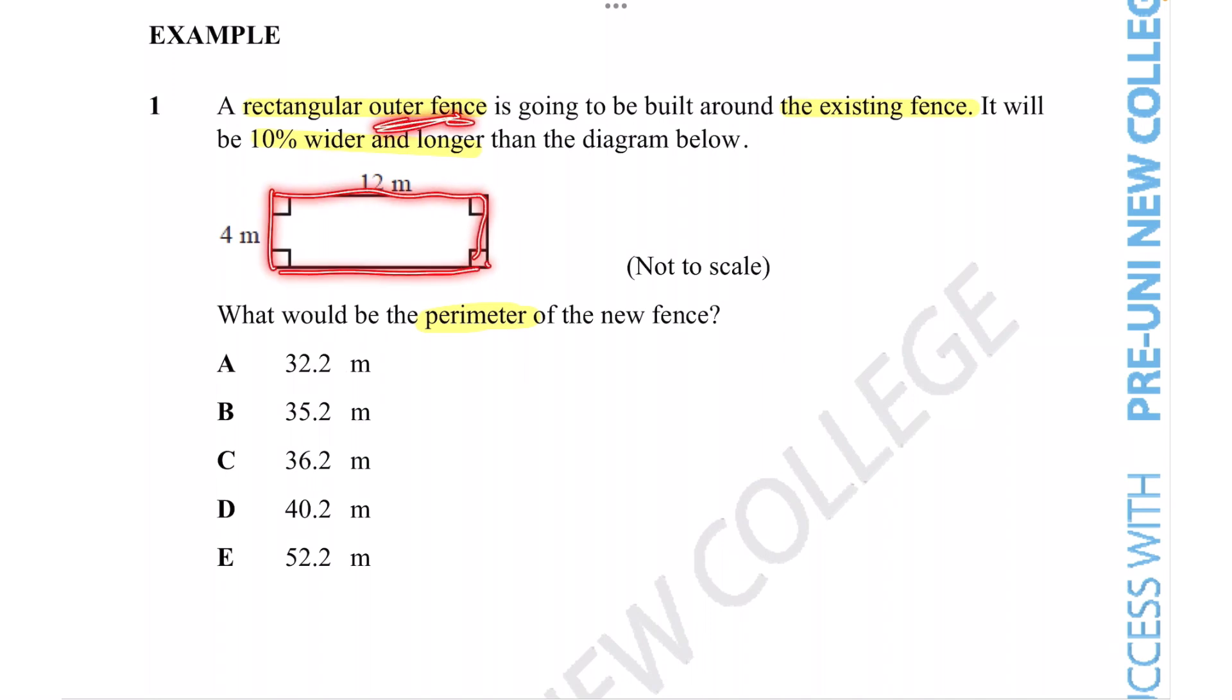Now we're told that another fence is going to be built around that, and it's going to be slightly wider and longer. I don't really know why they need a second fence when they've already got one, but for the sake of the question, that's what this setup is going to look like.